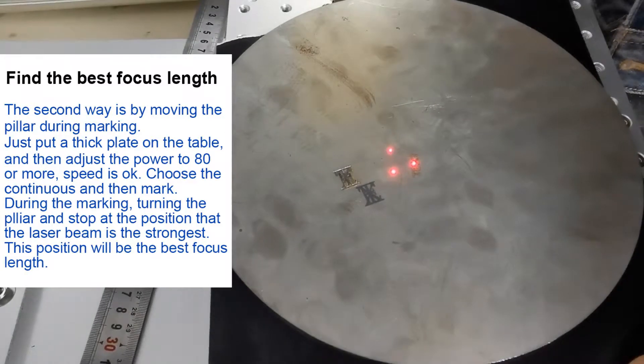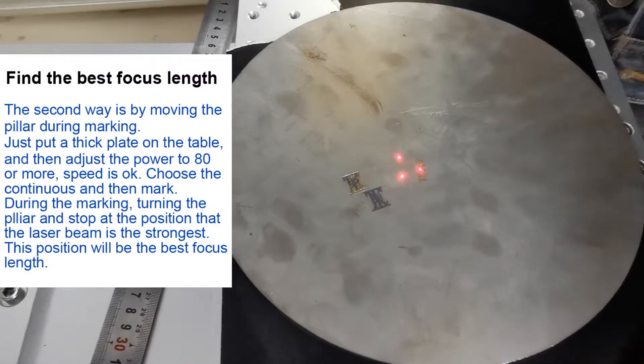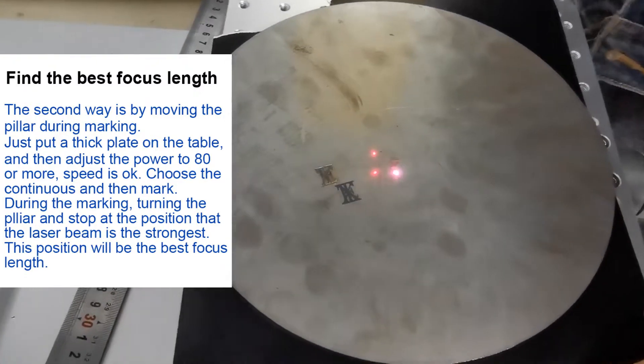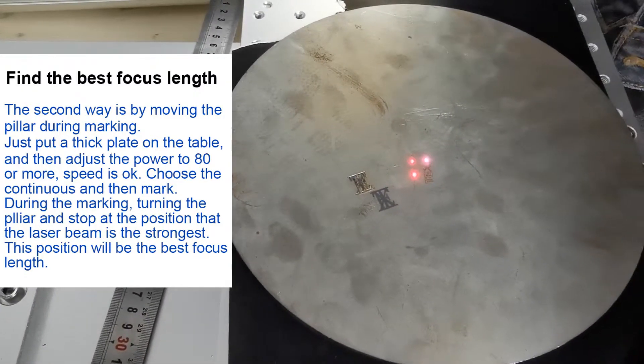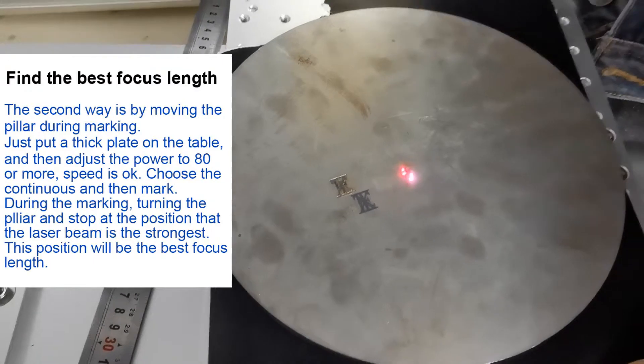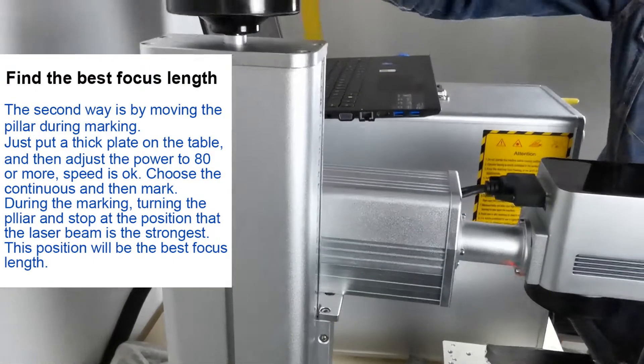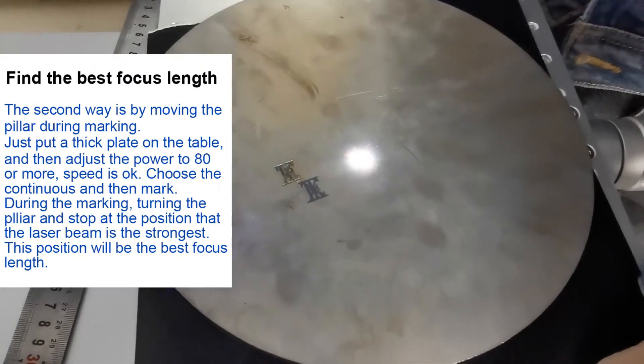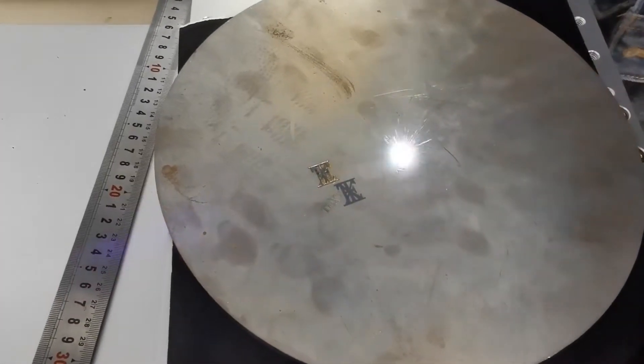The second way is to find the best focus length during marking. That means when we need to mark, mark continuously and then manually adjust to find the strongest laser beam. That position will be the best focus length.